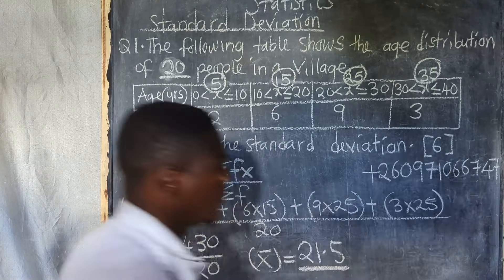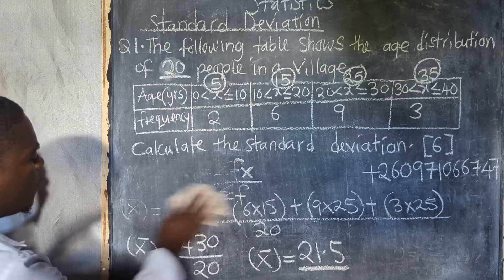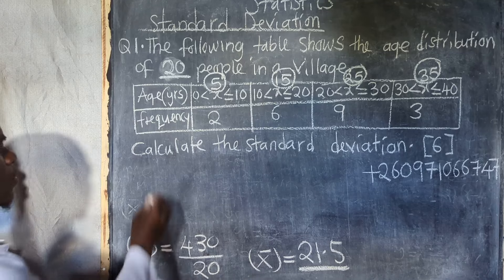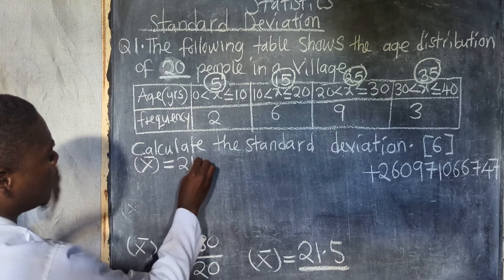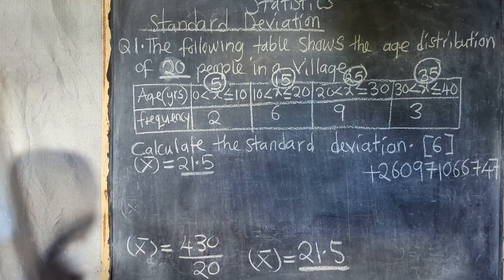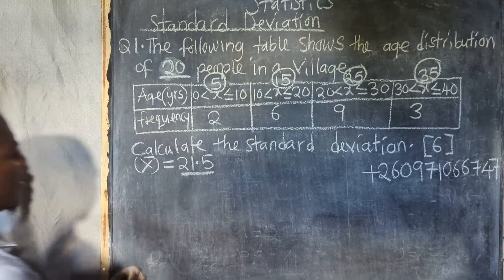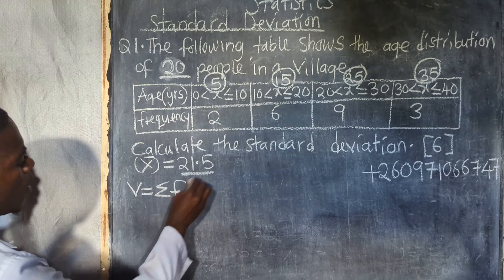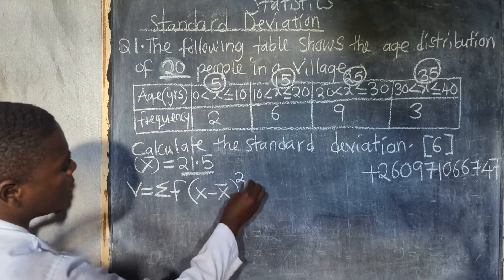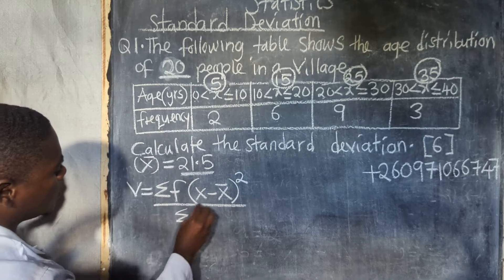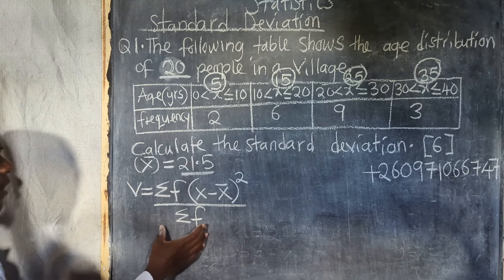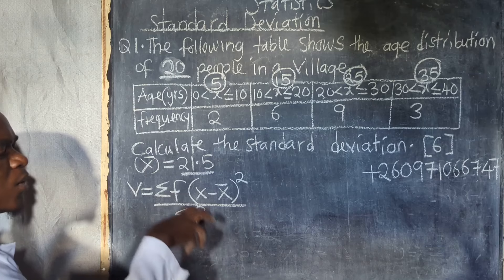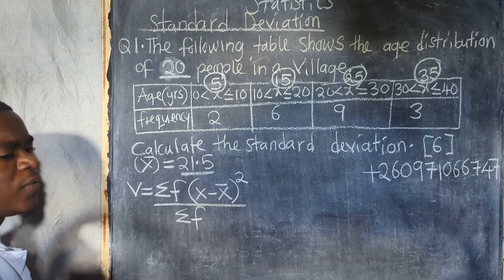After calculating the mean, we now need to calculate the variance. The formula for variance is: variance = summation of frequency times (x minus mean) squared, divided by the summation of total frequency. After we find the variance, we need to find the square root of the variance — and that is the standard deviation we are looking for.